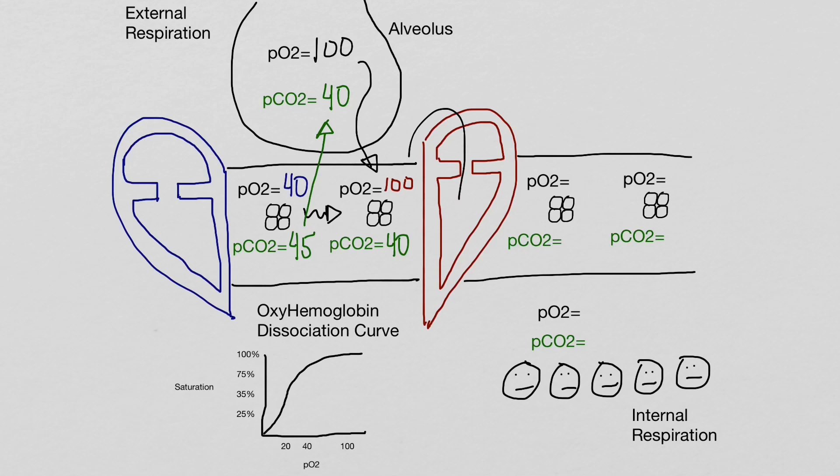The oxygenated blood will now move through the left side of the heart and be pumped out through the body. The partial pressures of oxygen and carbon dioxide will still be at 100 and 40, respectively.